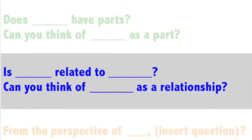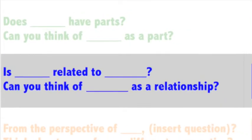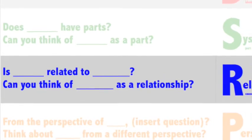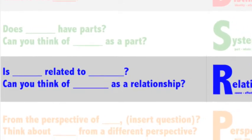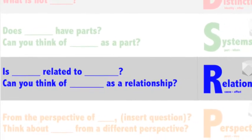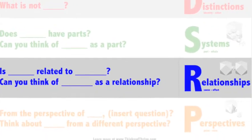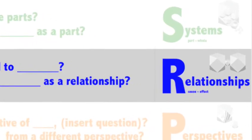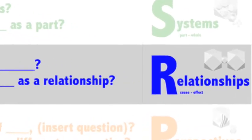You can teach your students to recognize relationships by using guiding questions: Is this idea related to that idea? How? Can you think about this idea as a relationship between two other ideas? Relationships — the interaction between cause and effect — is a universal pattern of thinking.